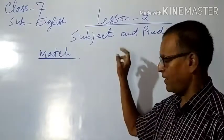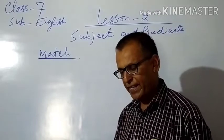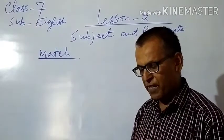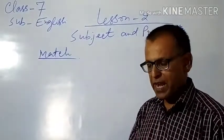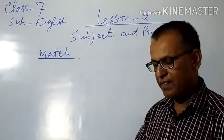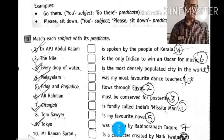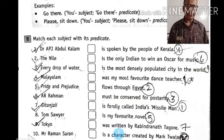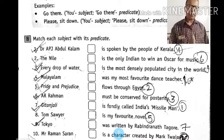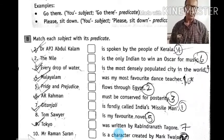So in this lesson, earlier we have seen what is subject and what is predicate. But now thereafter we will do the matching part. This is the first exercise of this lesson — Match the Column. Let us do the matching part of subject and its predicate. The subject part is given at the left hand corner and the predicate part is given at the right hand corner.